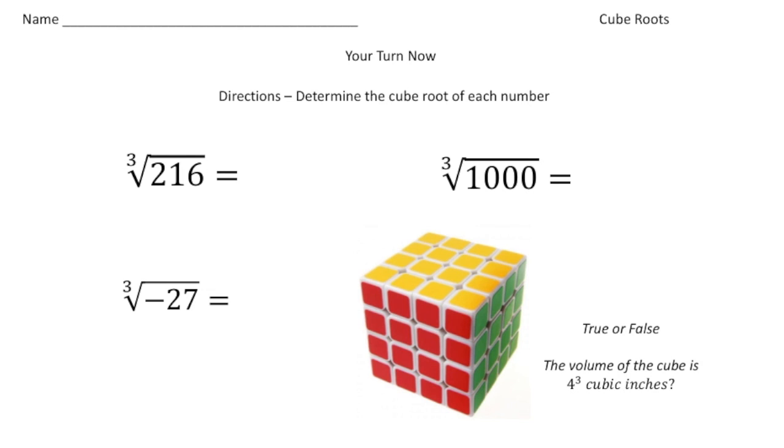Welcome back. Let's see how you did with these practice problems. The first one is we want to know the cube root of 216. So the question is, what number times itself, times itself a third time, gives us 216. I know that 6 times 6 is 36, and 36 times 6 is 216. So the cube root of 216 is going to be 6.